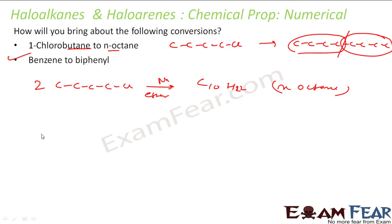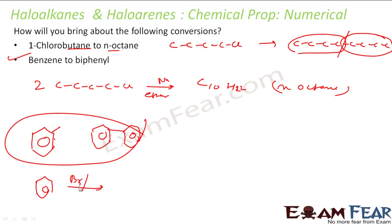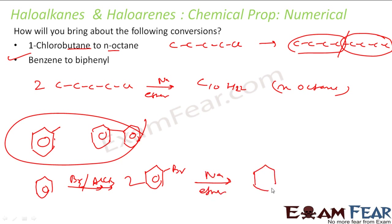The second example: benzene to diphenyl. Diphenyl is nothing but two benzene rings added together. So I convert benzene to an alkyl halide using AlCl3 or FeCl3 to get bromobenzene. Then I take two of these and add sodium in the presence of ether — same Wurtz reaction again. This gives diphenyl and 2 NaBr.